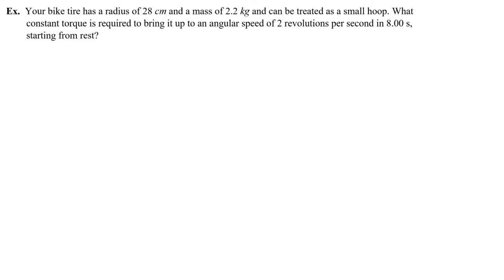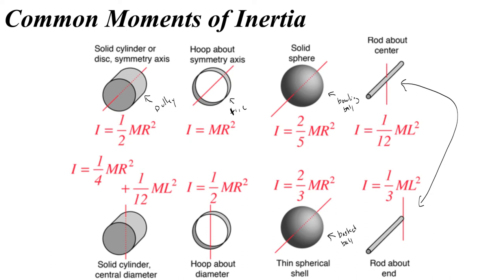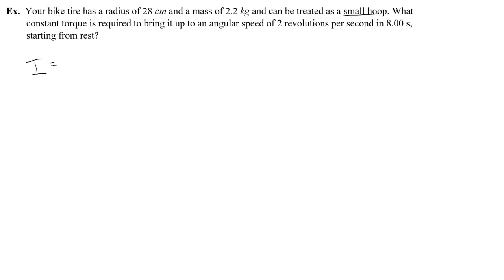Let's see how this works out in just very straightforward practice problems. Your bike tire has a radius of 28 centimeters and a mass of 2.2 kilograms, and can be treated as a small hoop. Okay, so right away, I would go ahead and think, alright, small hoop, what is the moment of inertia for a small hoop? Well, if I look up my common moments of inertia, oh, hoop about the symmetry axis. So MR squared. So I'll go ahead, and I'll write MR squared. You can use lowercase or capital. It doesn't matter to me. And then off to the side, I'm going to say R is not 28 centimeters, but 0.28 meters. Okay, great. Off to a good start. What constant torque is required to bring it up to an angular speed of 2 revolutions per second in 8 seconds.